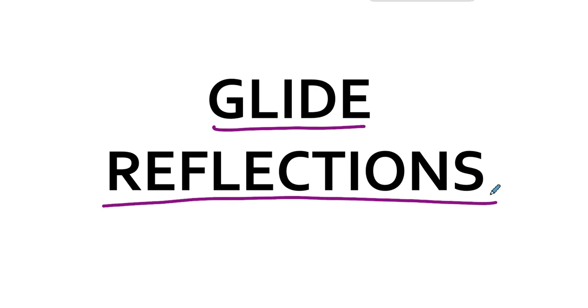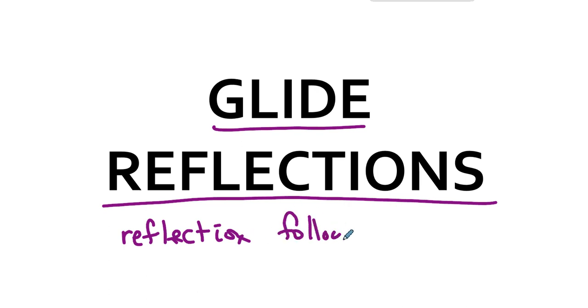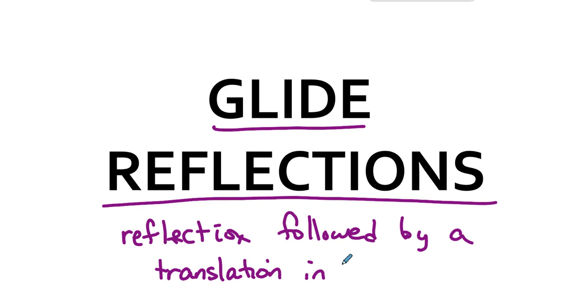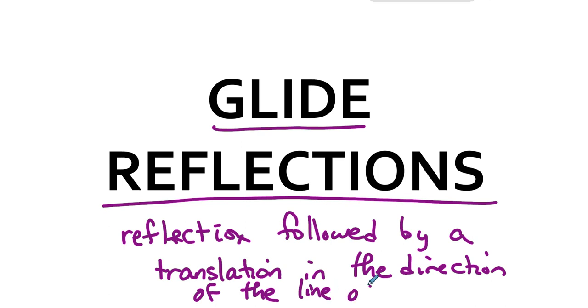Welcome back. In this screencast, we take a look at something that we consider to be a single transformation, but which really is two done at once. This is a glide reflection. A glide reflection is a reflection followed by a translation in the direction of the line of reflection.